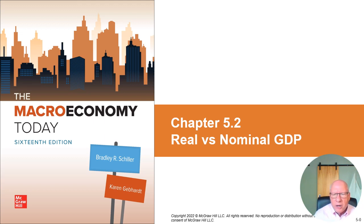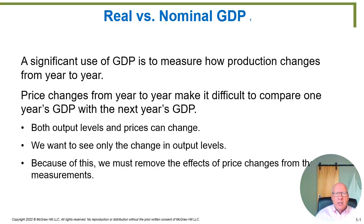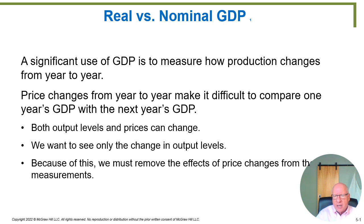In chapter 5.2 we're going to pick up with the distinction between real and nominal GDP. So what is the difference between real and nominal GDP? Here lies the problem of why we're even concerned with it, because a significant use of GDP is to measure how production changes from year to year. If last year the GDP was measured at four billion dollars and this year it's measured at five billion dollars, most people would say the economy is getting better off, because they know that GDP means the total value of goods and services.